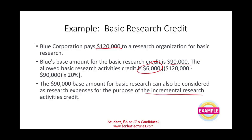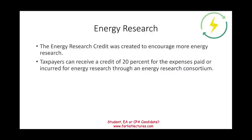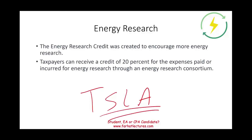The last component is the energy research credit, which is designed to entice individuals and companies to find alternative energy resources rather than relying on fossil fuels. A good example is Tesla and the electric car. The energy research credit was created to encourage more energy research, and taxpayers can receive a credit of 20% of expenses paid or incurred for energy research conducted through an energy consortium.